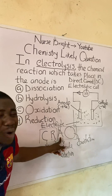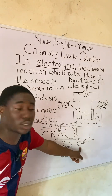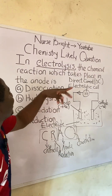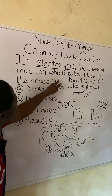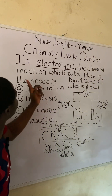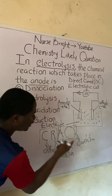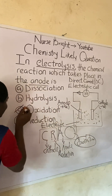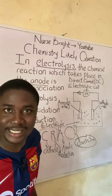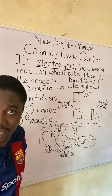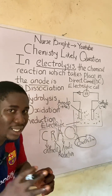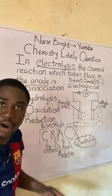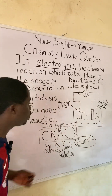Getting back to the question: in electrolysis, the chemical reaction which takes place in the anode is what? We've gotten the answer — the answer is oxidation. It is very important and actually very easy.